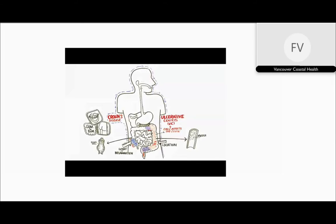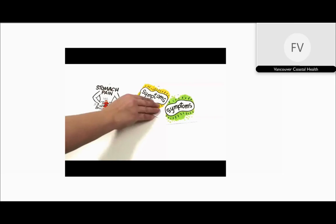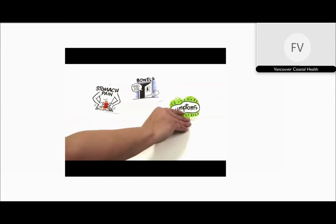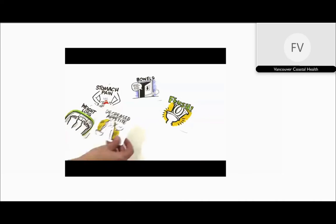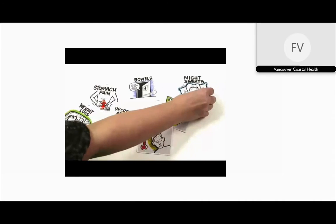These differences lead to different outcomes and different treatments. The major symptoms of UC and Crohn's do overlap. These include stomach pain and a change in bowel habits — almost always more urgent movements. Other symptoms include weight loss, decreased appetite, fever, night sweats, and extreme tiredness.